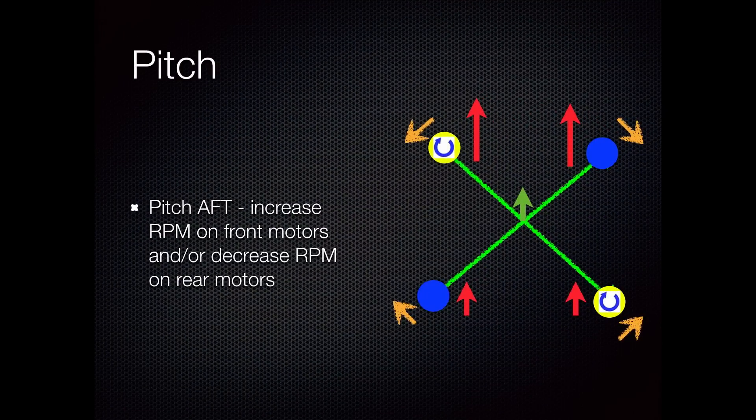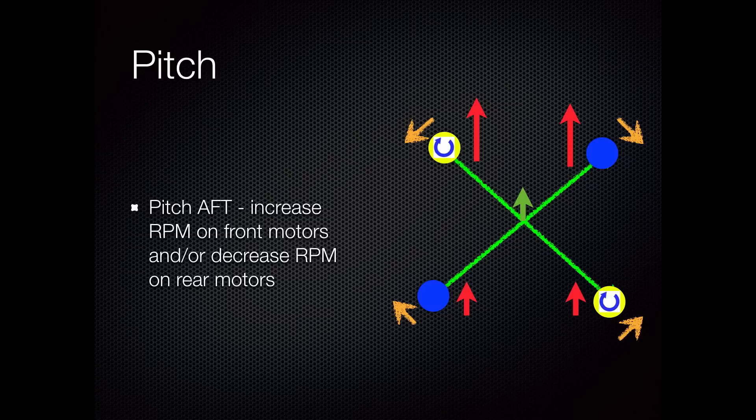Actually, the green arrow is showing where the front of the aircraft is. In this illustration, you're looking at a pitch aft maneuver. This would be pulling the right stick on your control back towards you, which would increase the RPM on the front two motors and/or decrease the RPM on the back two motors. The aircraft would still be pointing away from you, but it would move towards you or backwards.